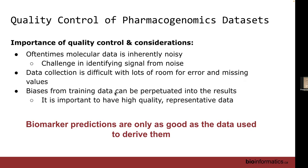Quality control of pharmacogenomics data. Molecular data, especially in cell lines but also in patients, is very noisy. The problem is you're trying to identify signal from noise — what is actually biologically meaningful versus what is just the cell being weird. Sometimes you can't even tell, so you have to make your best judgment. Data collection is very difficult and there's a lot of room for errors and missing values, especially in patient data.